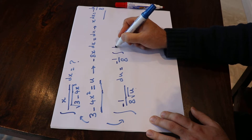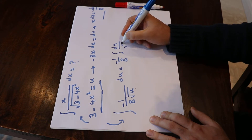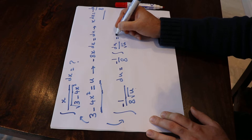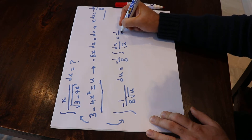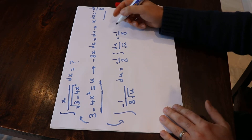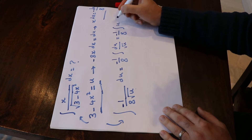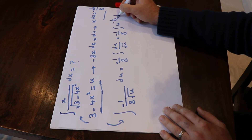The integral becomes the integral of du over the square root of u, which is equal to minus 1 divided by 8 times the integral of u with the power of minus 1/2 du.